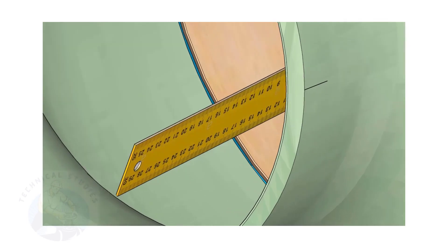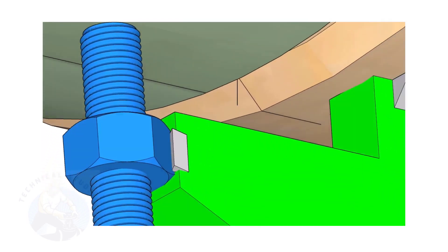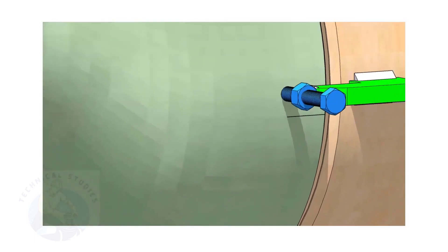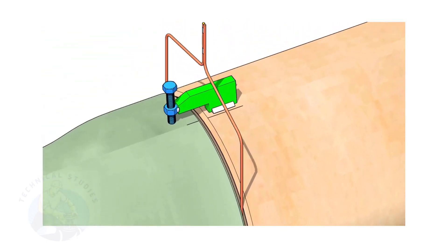By adjusting the jack bolts, correct the overlap of the joint inside the pipe. Now, tack weld on the top side of the joint.